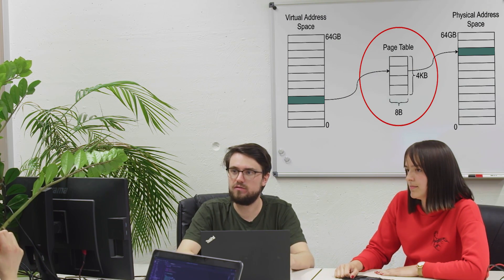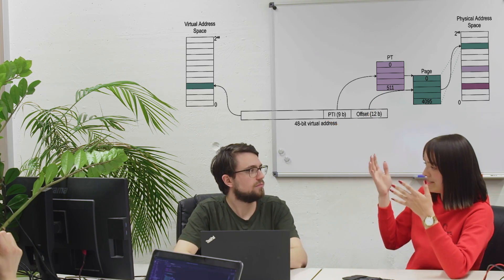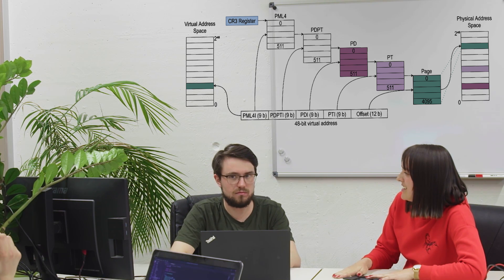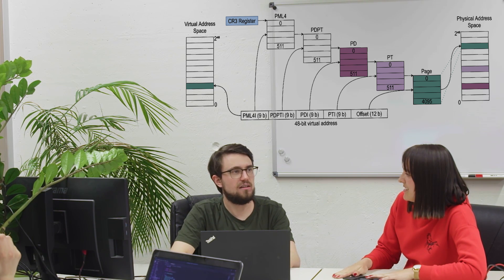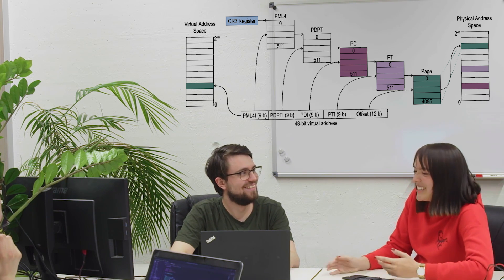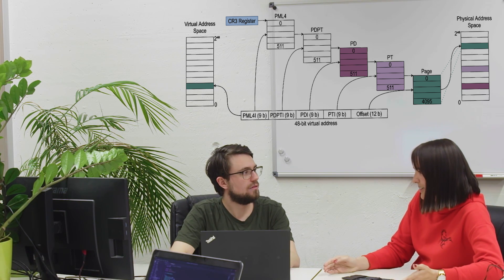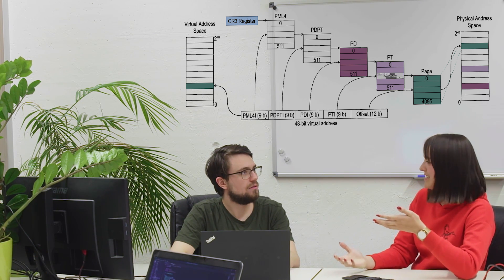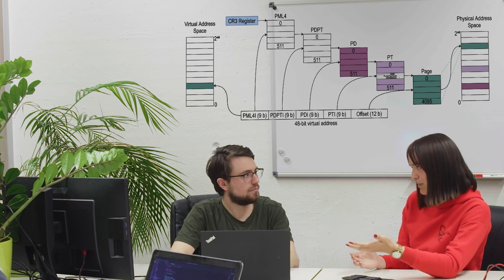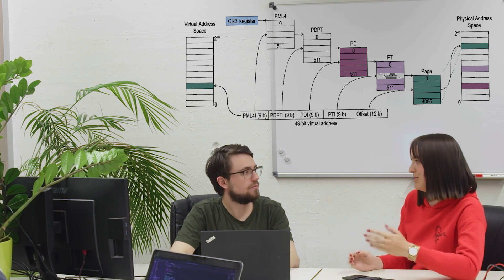But 4KB cannot fit all the mappings for the virtual memory of one process. Exactly. And that's why we have a tree of page tables. That sounds like a nice design. Oh yeah, it absolutely is. We just have one question left to answer here: what is the size of a page table entry? So, you want to map a 4KB block from virtual to physical.